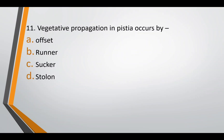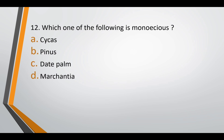Question eleven: vegetative propagation in Pistia occurs by — offsets, runners, suckers, or stolon. The correct answer is option A — offset. Question twelve: which one of the following is monoecious — Cycas, Pinus, date palm, or Marchantia? The correct answer is option B — Pinus.